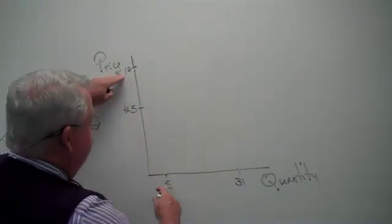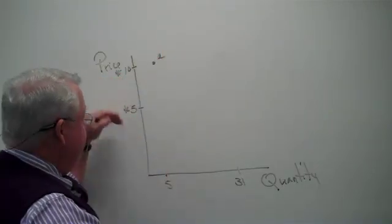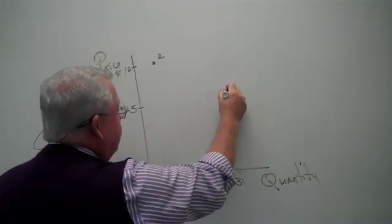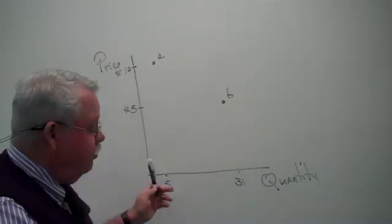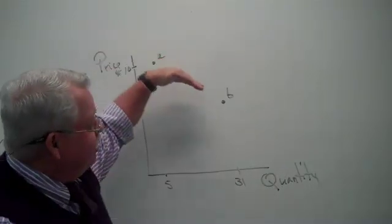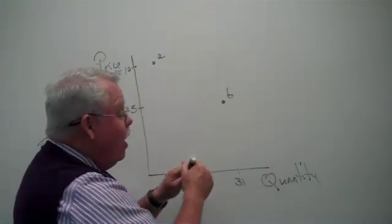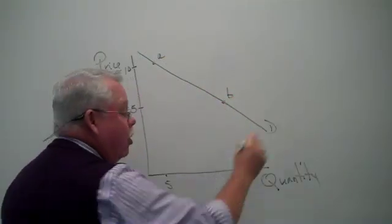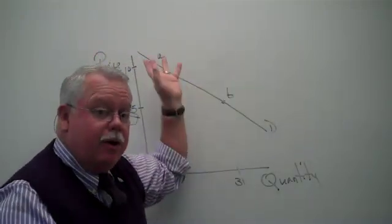But if we experiment, we might learn that when we reduce the price of hamburgers down to $5, we might sell, I'm making up a number here, 31 hamburgers per day. Let's plot those two points. $10 and 5 units would give us a point up here at A, and at $5, 31 units gives us point B. If we plotted different prices and how much people would buy at each price, we would get a basically negative sloped relationship.